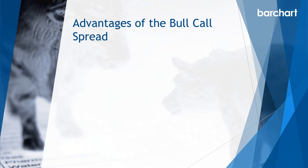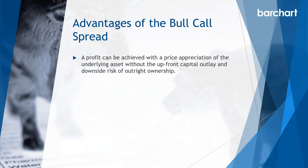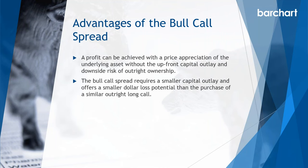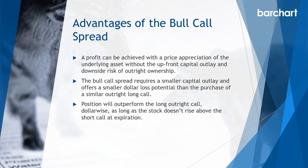The cost of entry to control 100 shares of stock is a fraction of the cost of purchasing those 100 shares outright. While the stock price could fall and expose the stock owner to downside risk, the option trader's risk is limited. Because of the cost offset from selling the higher call, the bull call spread will outperform the purchase of an outright call at expiration, as long as the underlying stock price doesn't rise above the higher strike.